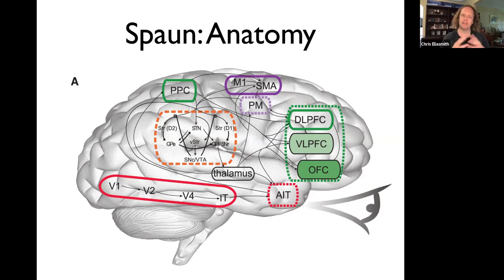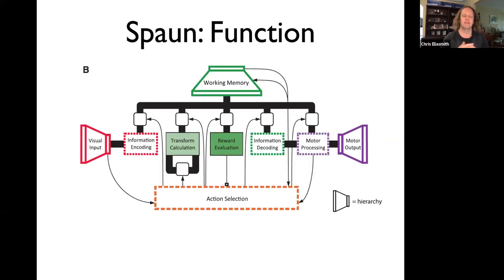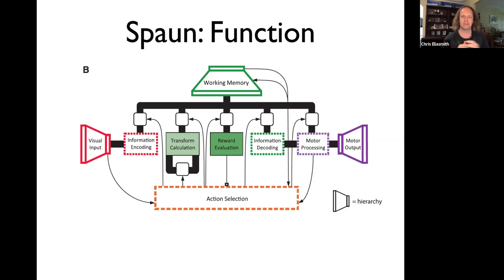But from a cognitive architecture perspective, we tend to take a different view, especially when talking about function. That's a view where we have components labeled with their function and interactions between those components. These colors are related between the two slides — working memory areas were more frontal, motor output was in the motor areas, and so on.